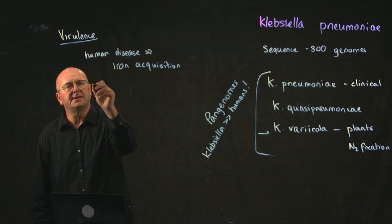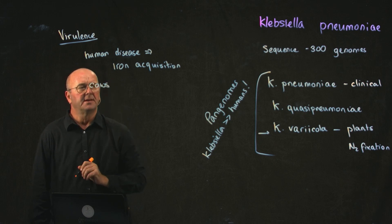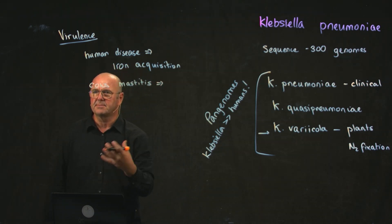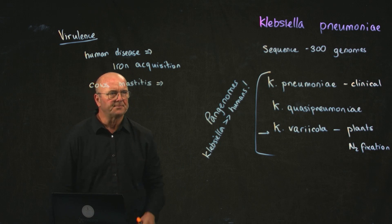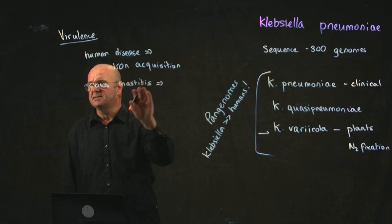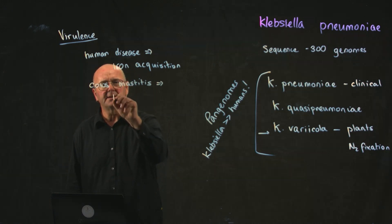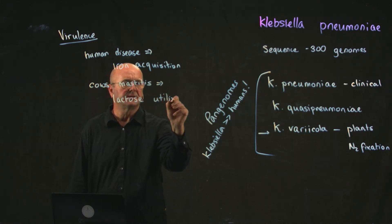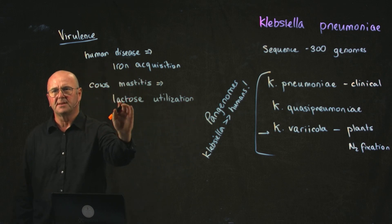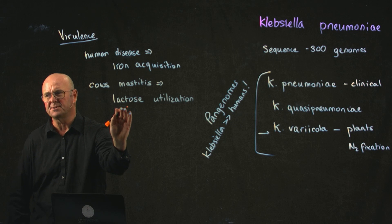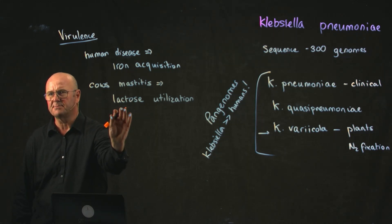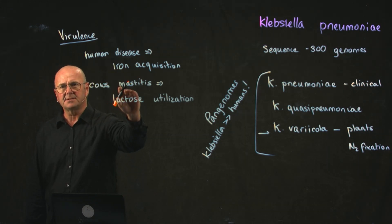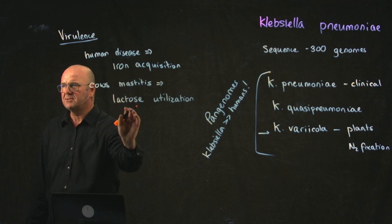Another thing they found is that in cows, they have a disease called mastitis — it's usually an infection of the udder where the cow produces milk. For Klebsiella to cause disease in cows, they acquired a set of genes that allow them to utilize a sugar called lactose. Lactose is the primary sugar in milk, the primary component of milk. So if Klebsiella wants to cause disease in cows associated with milk production, it required genes that allow it to grow on milk.